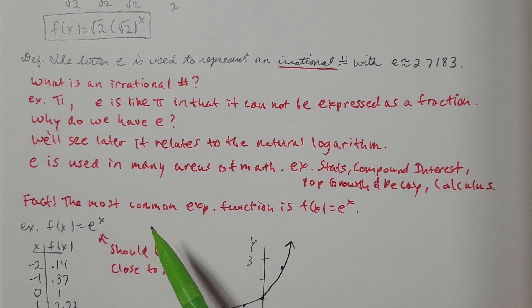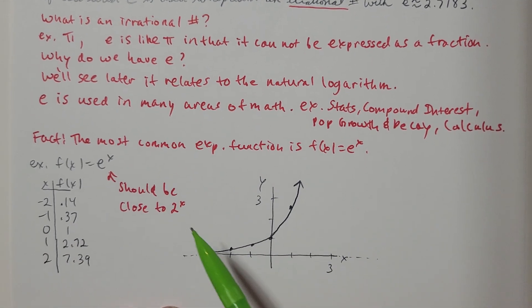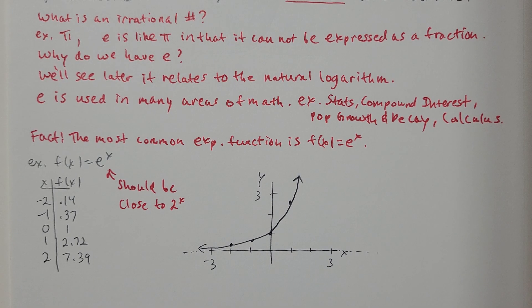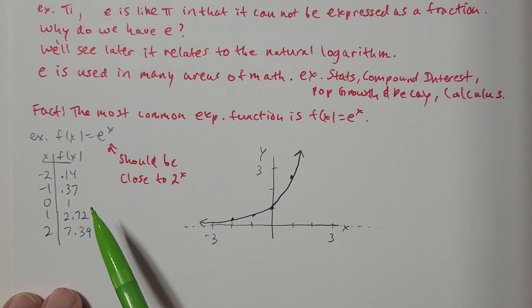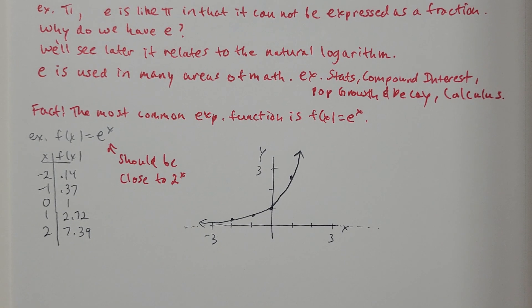And just a general fact says that the most common exponential function is f(x) equals e to the x. That's the exponential function, meaning that there's going to be many more times where you're going to have base e as opposed to any other base. So there's significantly more math problems out there where I'm going to be working with e to the x as opposed to like 2 to the x or 5 to the x or 1 half to the x. So let's go ahead and graph f(x) equals e to the x next.